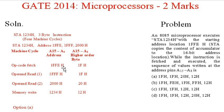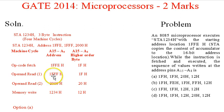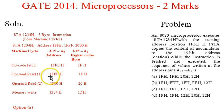For the opcode fetch at address 1FFEH, the upper byte of the address is 1F. The next machine cycle is operand read 1, and the address is the next address, 1FFFH. The upper byte remains the same — 1F — which is written here as 1F.